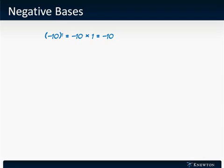Here, we have negative 10 raised to the first power. This is negative 10 times 1, a negative number times a positive number, which gives us a negative number: negative 10.